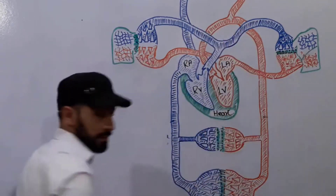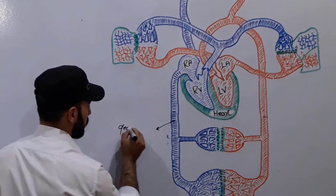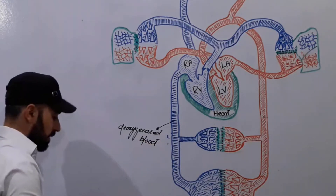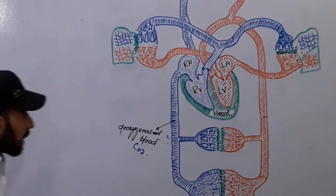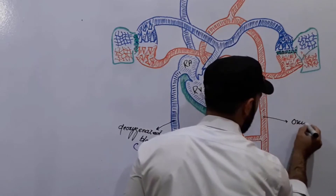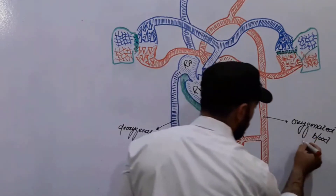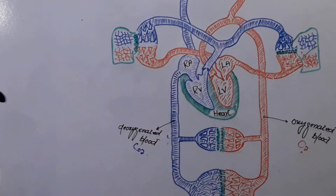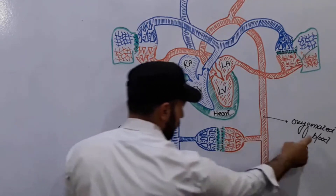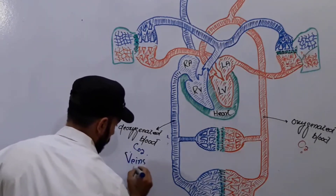You can see the colors I have used. This blue color, wherever you see it, represents deoxygenated blood — meaning this blood contains CO2, carbon dioxide. And this red color, wherever you see it, represents oxygenated blood — meaning this blood contains oxygen O2, pure blood. So our deoxygenated blood is present in our veins.